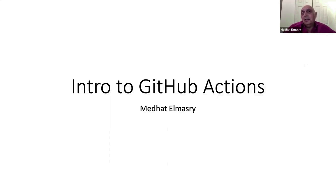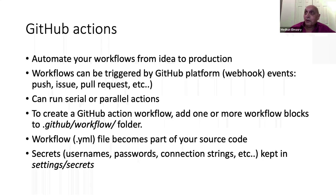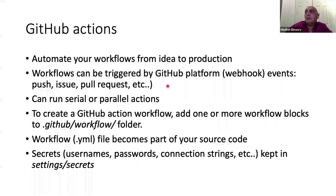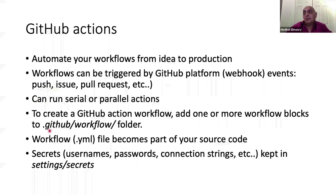So I'm going to go through about eight slides first and then we'll go into demos. First of all, what can you do with GitHub Actions? You can automate your workflows from idea to production. Your workflows can be triggered by any legitimate GitHub event — for example, every time you do a push, every time you add an issue, every time there's a pull request, etc. There are 28 such events that can trigger a workflow.